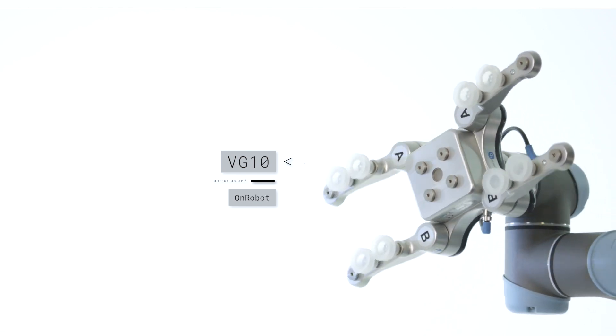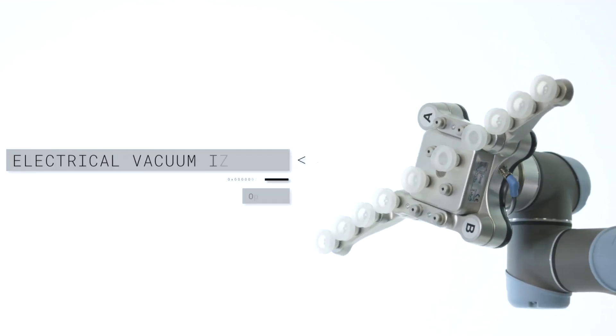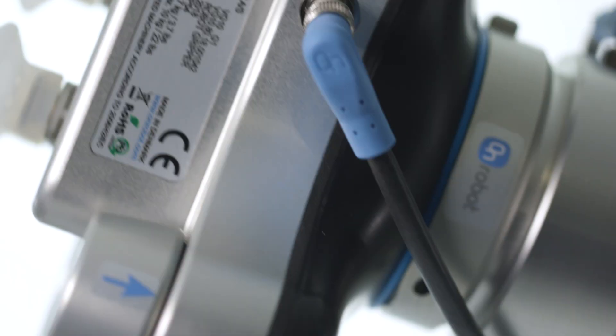Meet the VG10, the flexible adjustable electrical vacuum gripper. The gripper features a built-in electric vacuum.